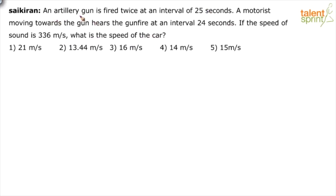So an artillery gun is fired twice at an interval of 25 seconds — you fire a gunshot now and then after 25 seconds you fire the next one. A motorist, a person moving in a car, is moving towards the gun and hears the gunfire at an interval of 24 seconds.